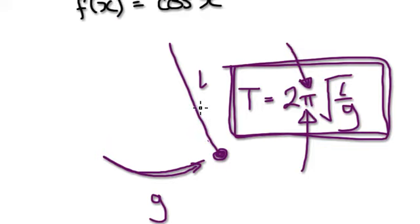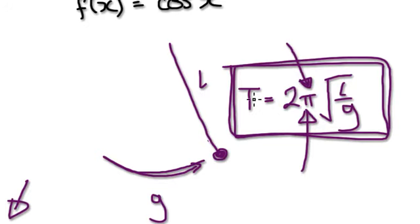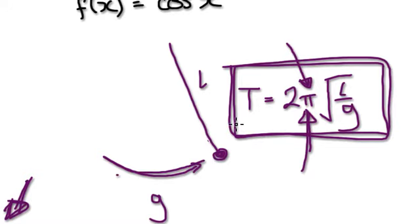Where there's pi there's normally a circle, so where is the circle in this situation? Try and see if you can see a circle somewhere here. Press pause and have a think.